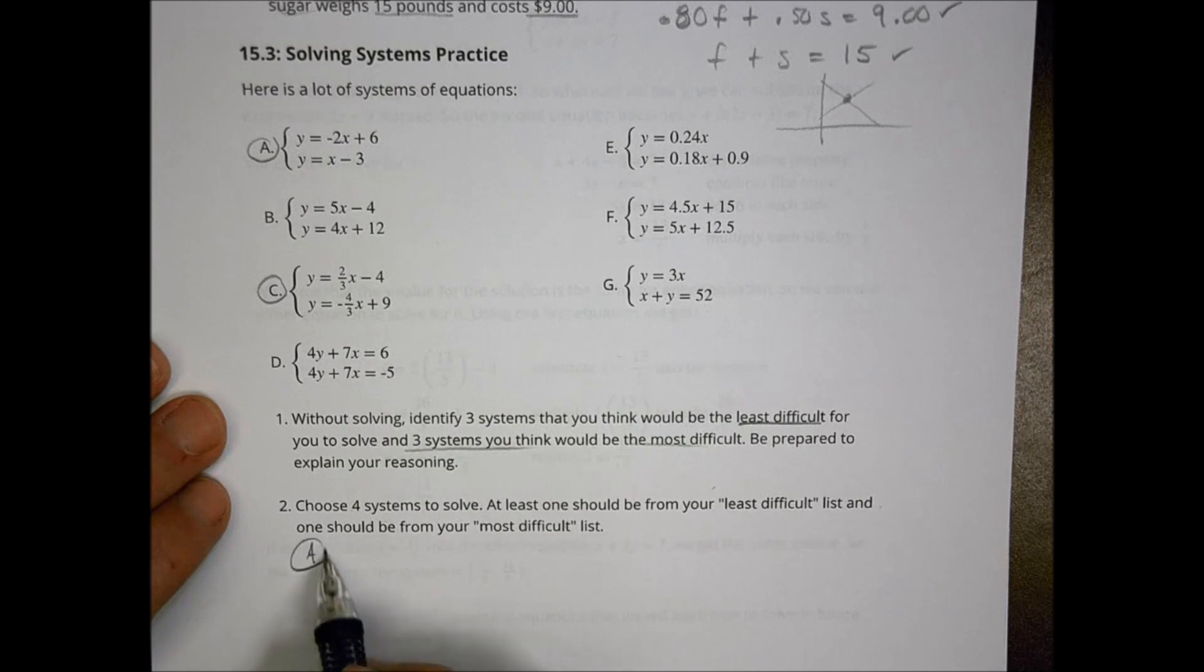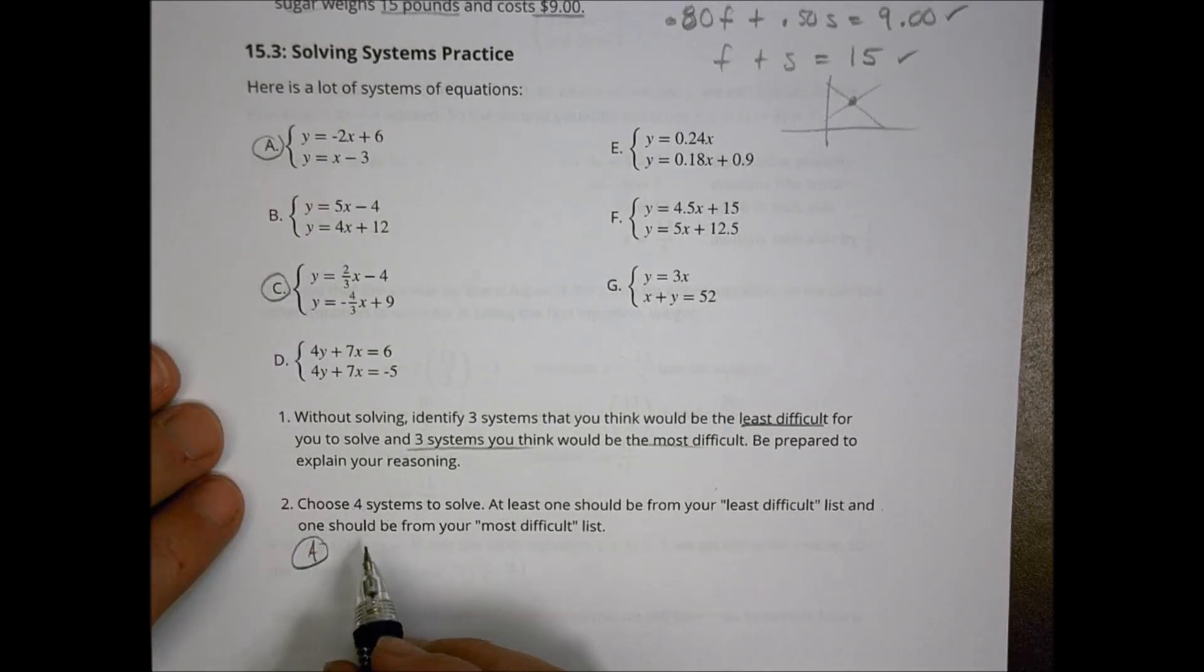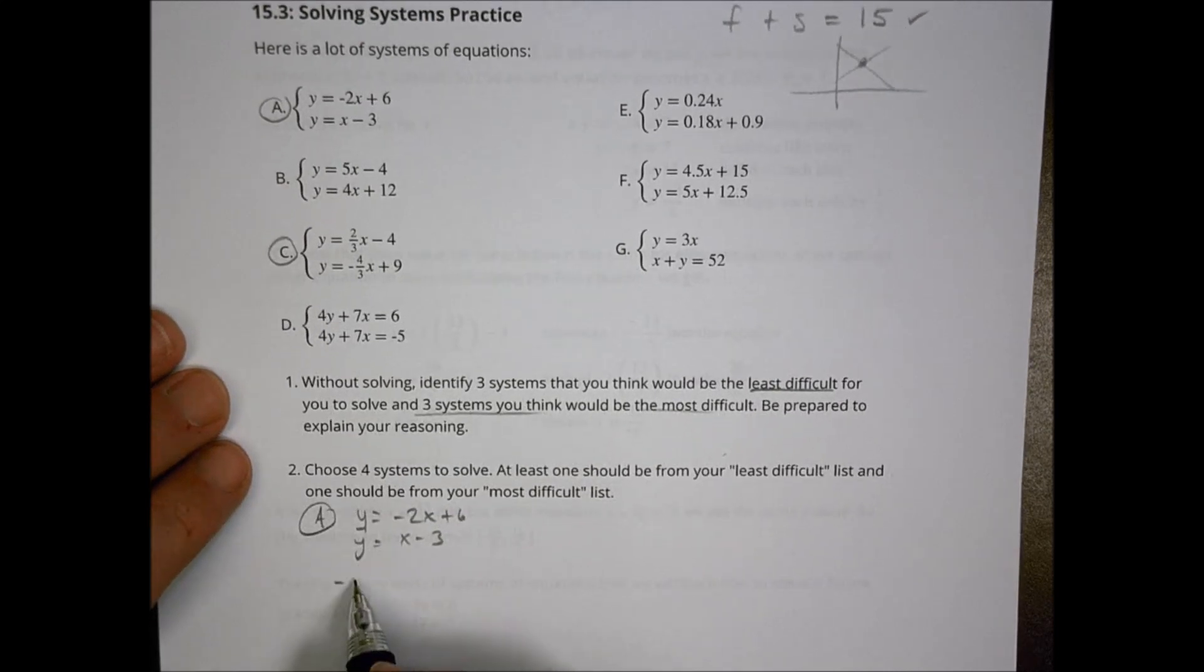I have Y equals negative 2X plus 6 and Y equals X minus 3. I'm going to go ahead and just set them equal to each other. So negative 2X plus 6 equals X minus 3. I'm going to add a 2X here, so I have a positive 3X here, add a 3 so I have a 9 there, divide by 3 and 3 equals X. I can plug that back into one of these values here, 3 minus 3 for the X. And so we have Y equals 0, so the solution would be 3 comma 0 for letter A.